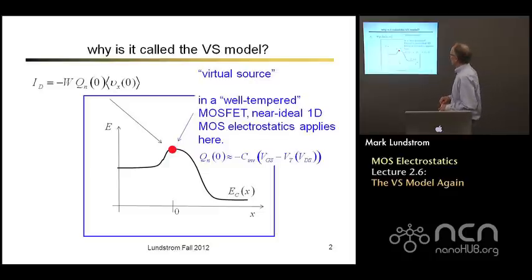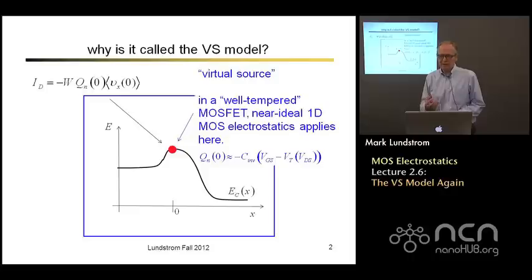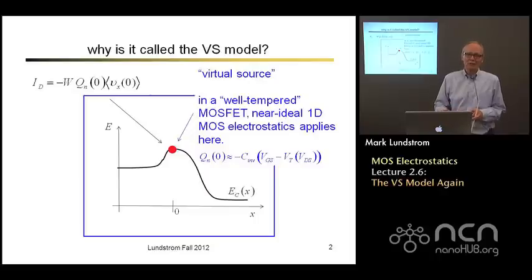So that's a virtual source of electrons. We maintain a constant density of electrons there. And in a well-designed MOSFET that's mostly controlled by the gate and very weakly by the drain. So we have this simple expression from 1D MOS electrostatics that applies at the top of the barrier, not always, only when we've designed a good transistor.